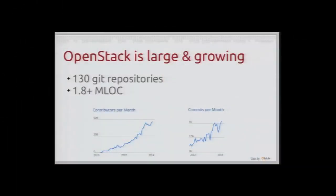First of all, OpenStack is very large. It's more than 130 code repositories, totaling about two million lines of code depending on exactly how you count and what you include. But it's large and it's also growing very fast. We basically doubled the number of contributors over the last year. We also doubled the number of commits over the last year. So it's large and it's growing very fast.